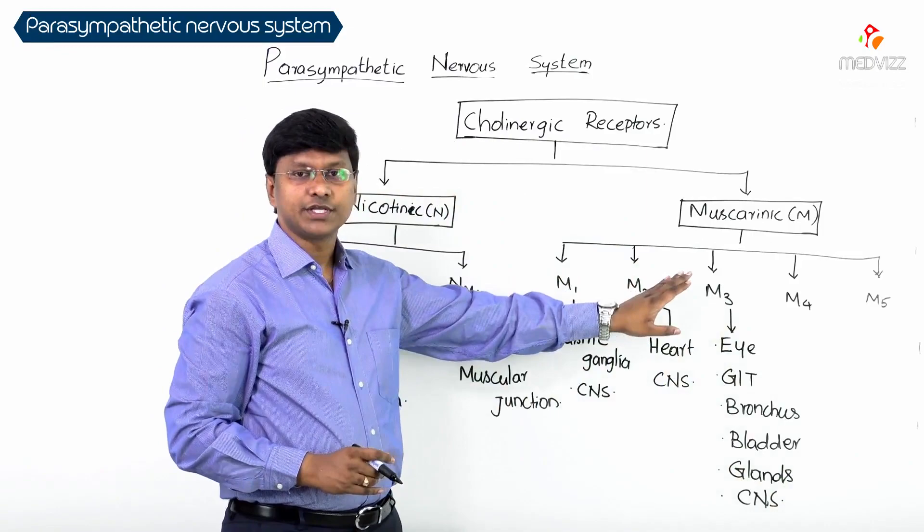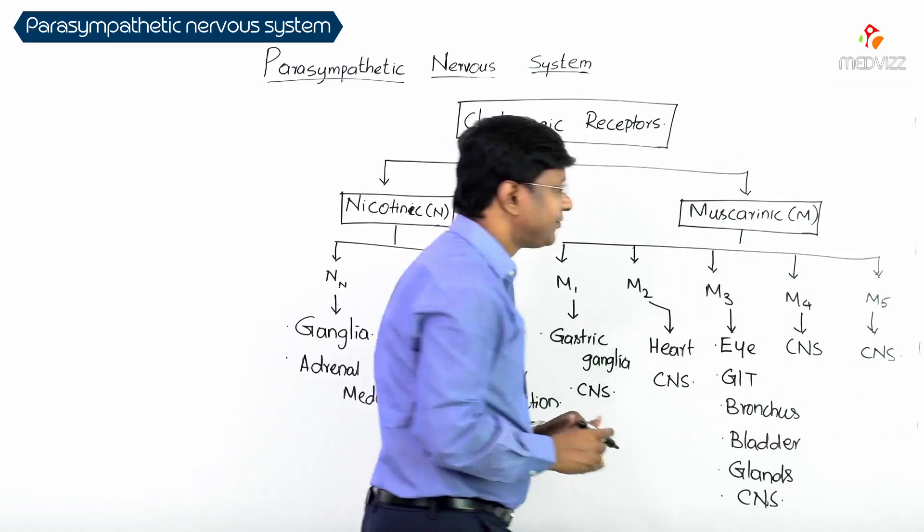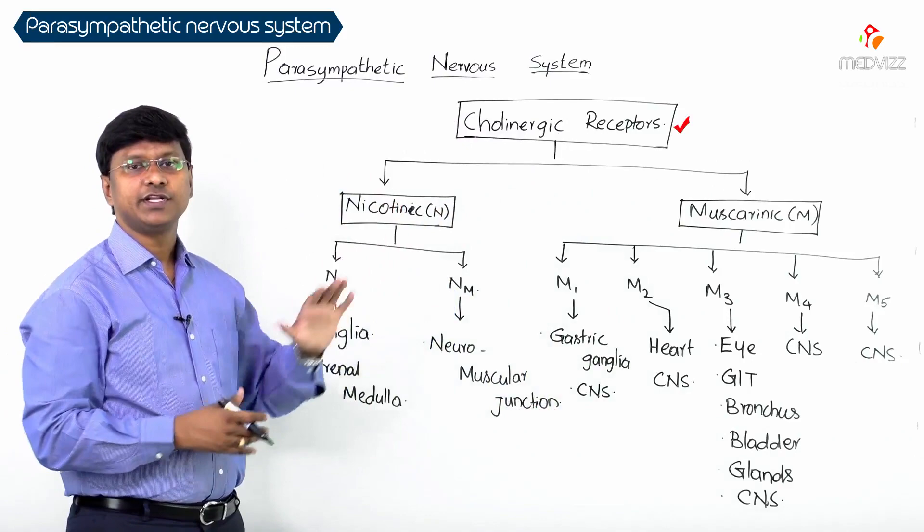M4 and M5 receptors — both of them are present in the central nervous system.